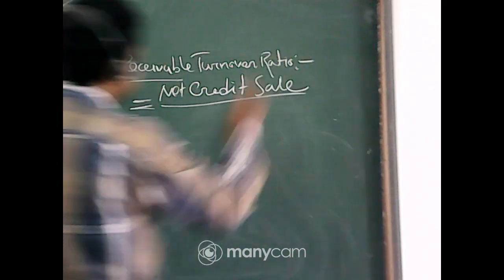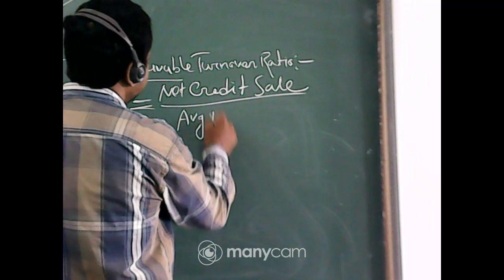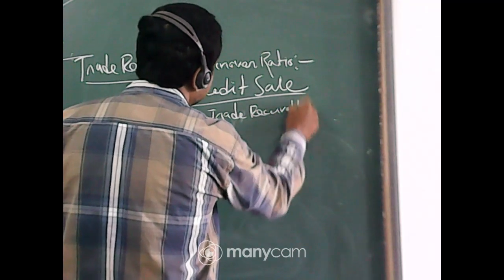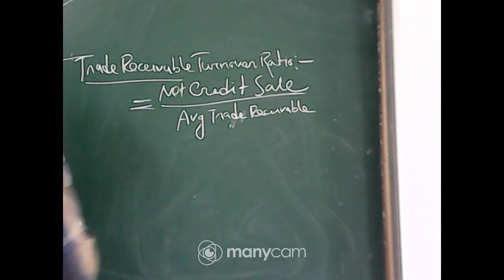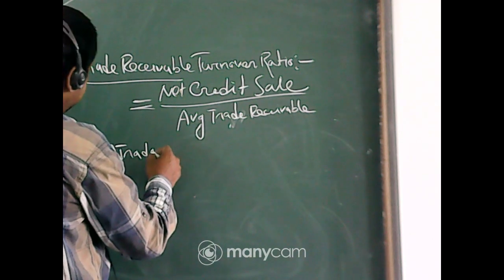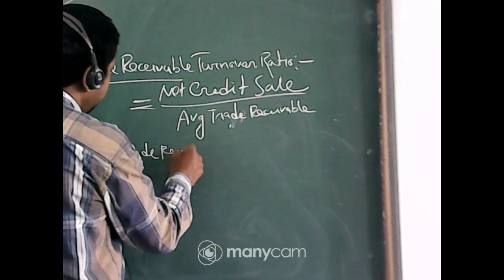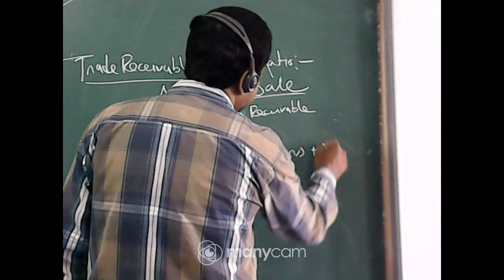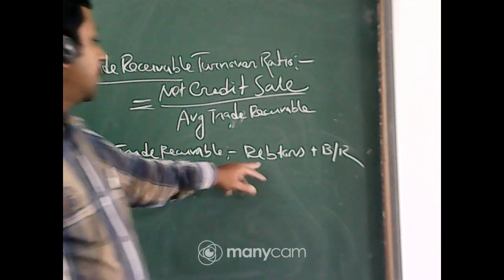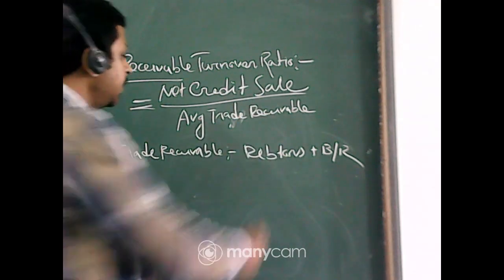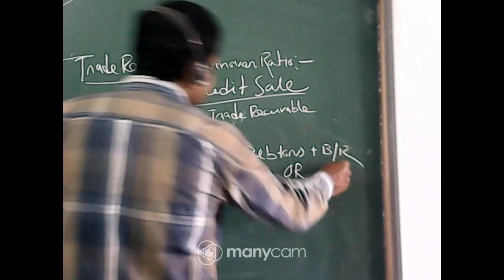Now what is the formula? Trade receivable turnover ratio equals net credit sales divided by average trade receivable. For average trade receivable, you need at least two figures. Now, debtors and bills receivable are different names but same nature. If only one figure of each is given in a question, no averaging is needed — just add debtors plus bills receivable.